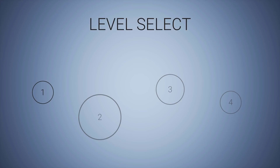Hey everyone and welcome to another Unreal tutorial. Today we'll be looking at editor functions and blutilities. The blutilities are a slightly newer addition to Unreal Engine, so you'll need either 4.19 or 4.2 and above. I'm going to be using 4.2 just to be safe, but for all of the functionality you'll see here, you will need to be using one of the newer versions.